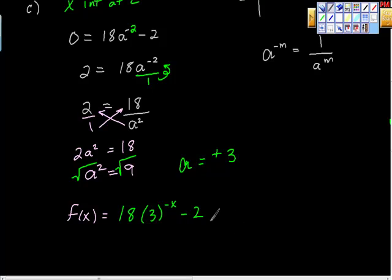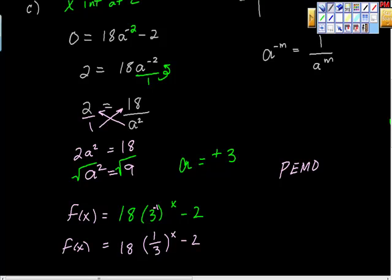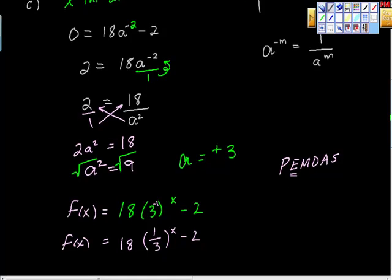We can rewrite this by taking the negative and putting -1 inside the exponent: 3 to the negative 1 is the same as 1/3, so f(x) = 18 times (1/3) to the x, minus 2. A caution: remember PEMDAS. You might be tempted to combine 18 and 1/3 into something like 6, but you cannot — there's an exponent happening here, and we can't do multiplication until after exponents. This is not a simplification. Say that to yourself three times.